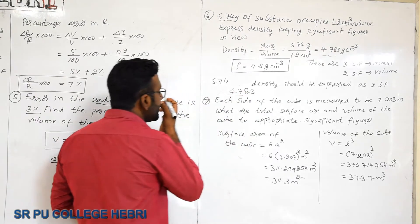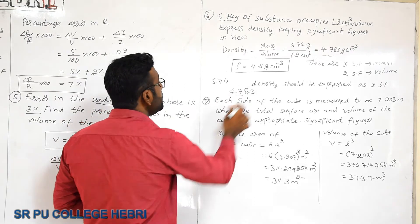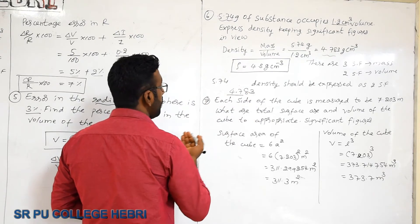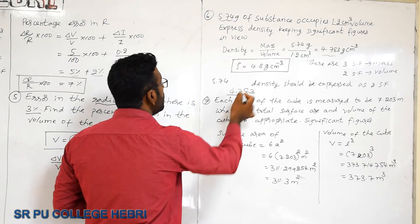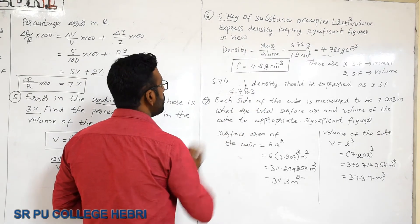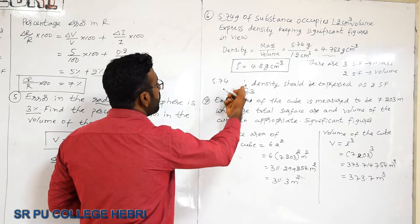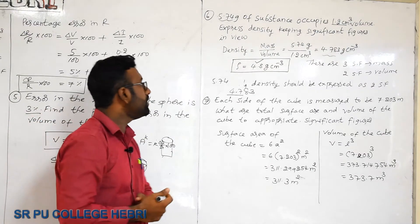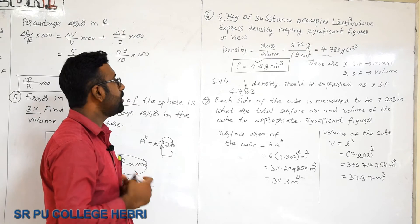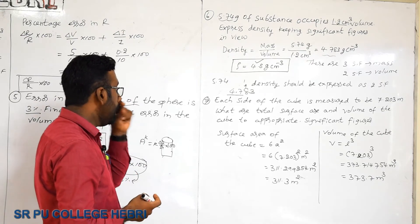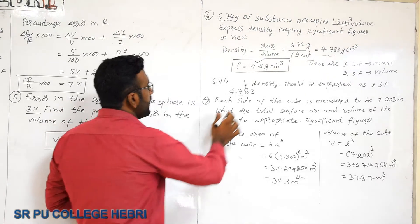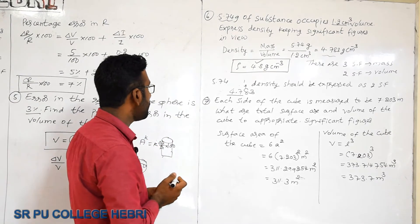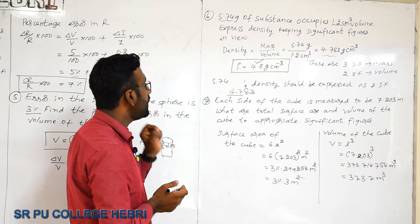To round 4.783 to two significant figures, look at the digit after 7 — it is 8, which is greater than 5, so the preceding digit is raised by one. The answer is 4.8 g/cm³. If you have any confusion, review the rules for rounding significant figures.